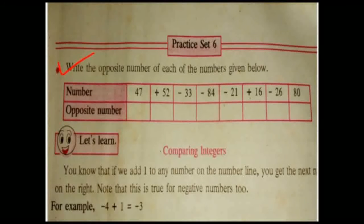Write the opposite number of each of the numbers given below. Opposite numbers means positive numbers become negative numbers and negative numbers become positive numbers. If the questions are in positive numbers, you have to write in negative form. If the questions are in negative numbers, you have to write in positive form.